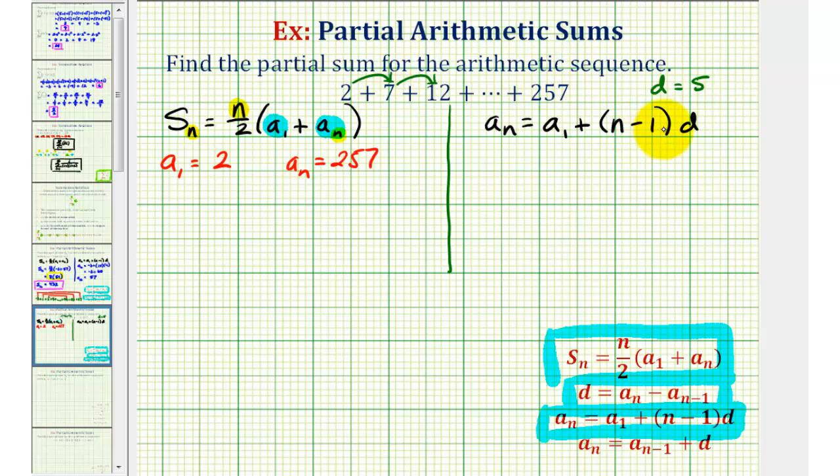So now that we have d, we can find n. We would have a sub n, the last term, 257 equals a sub one, the first term, two, plus the quantity n minus one times our common difference d, which is five.